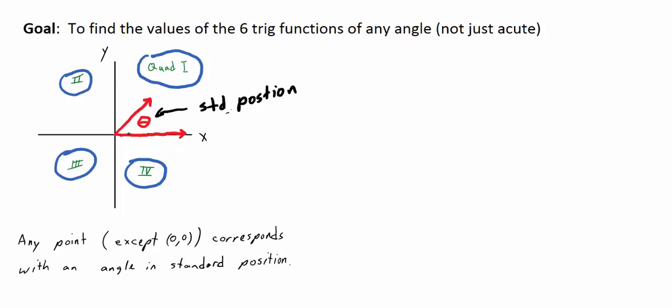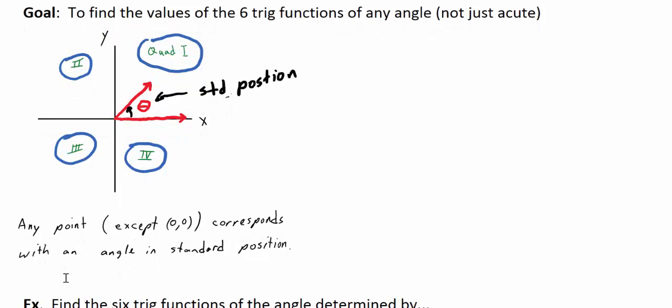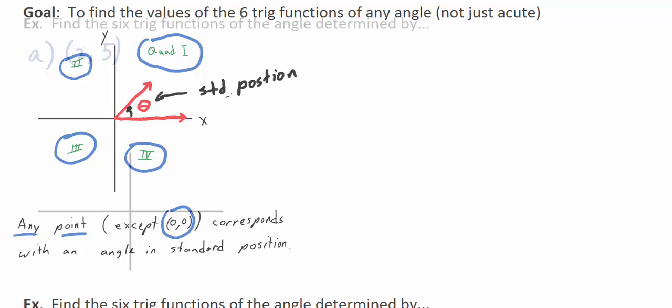As long as you sweep out this angle in a counter-clockwise motion, theta is positive. If you go clockwise, then theta is negative. To describe the trig functions of any angle in standard position, any point in the XY plane — except for (0, 0) — corresponds to an angle in standard position. I'm going to show you that with the next example.